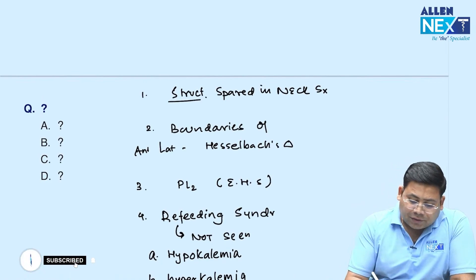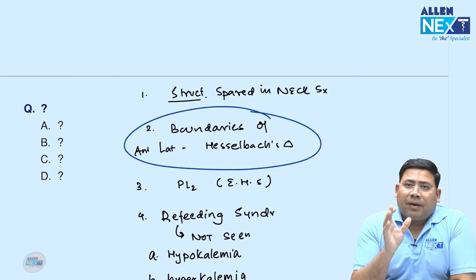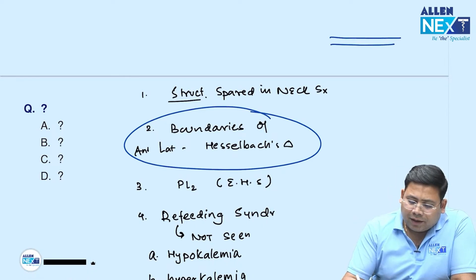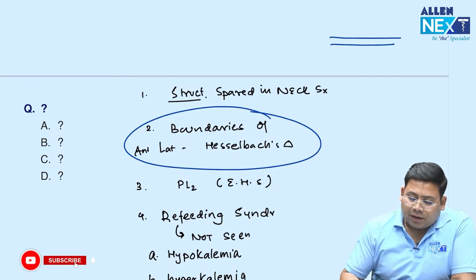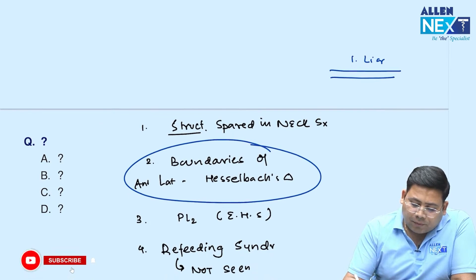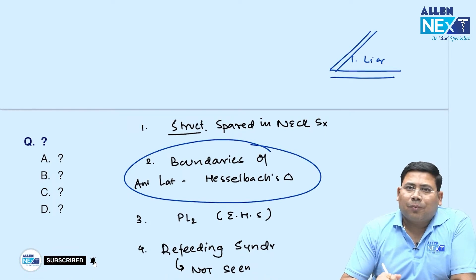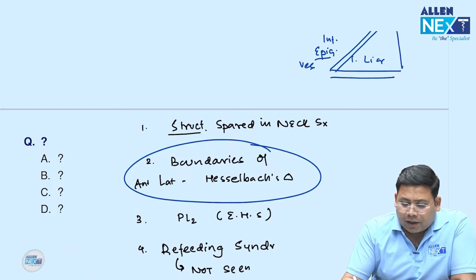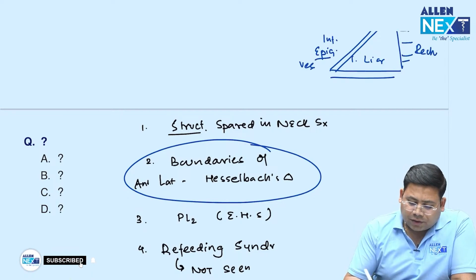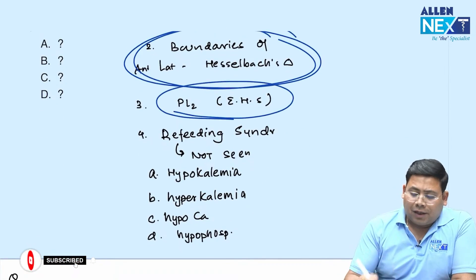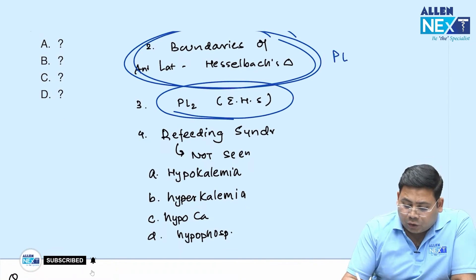Next: boundaries of Hesselbach's triangle. The base is made by the inguinal ligament. The superolateral border is made by the inferior epigastric vessels. The medial boundary is made by the lateral border of the rectus abdominis. This was the question, along with a question about the inferior epigastric vessels.